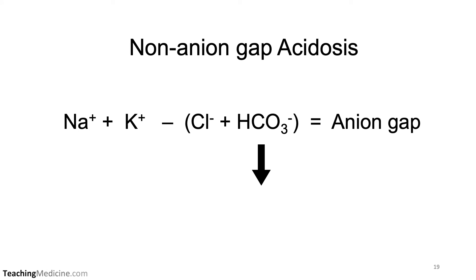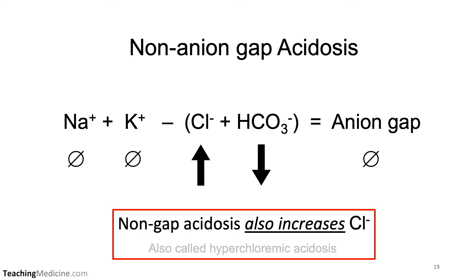With a non-anion gap acidosis, there is no new acid. When the bicarb drops, electrically these negative charges need to balance out, and the chloride is increased. So two changes occur: the sodium and potassium don't change very much, and since the bicarb and chloride balance each other out, the anion gap does not go up. A non-anion gap acidosis also increases the chloride ions and is therefore sometimes called a hyperchloremic acidosis.